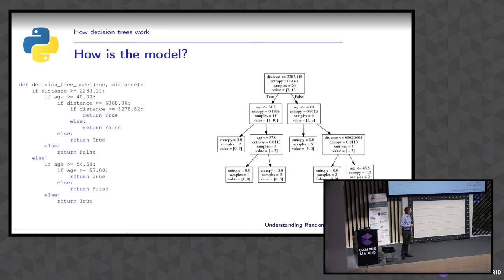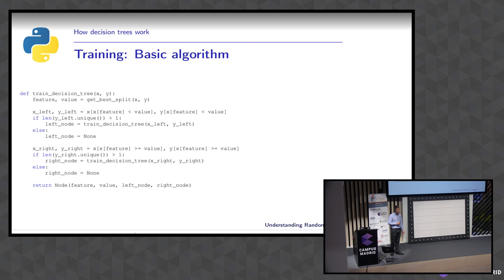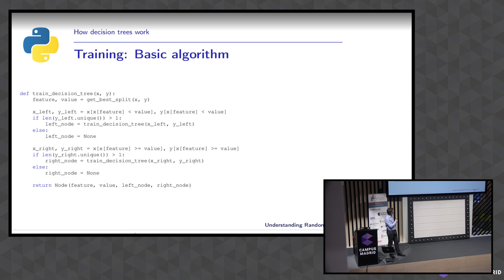What the algorithm does: first it takes the data and looks for the best split — that's the tricky part. It checks whether it's a pure node, meaning all samples belong to one class. If the unique class count equals one, it stops; otherwise it keeps on working the same algorithm recursively, looking for the next best split.